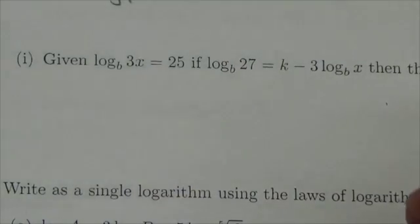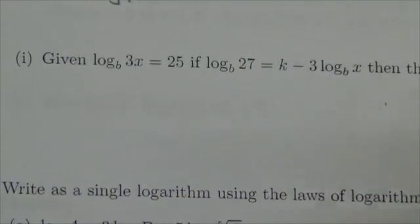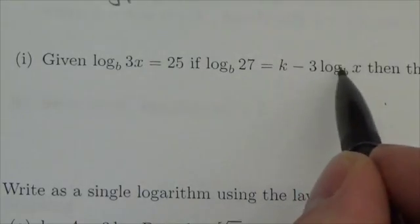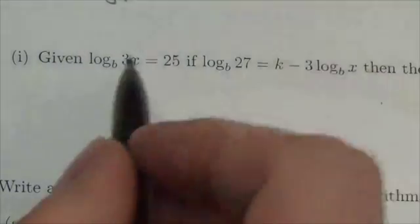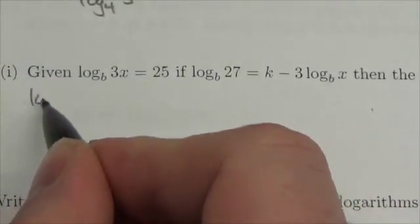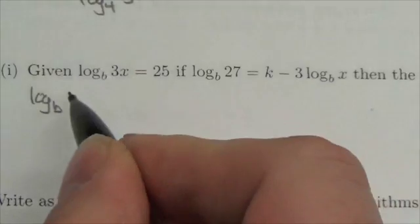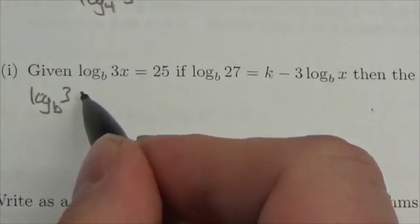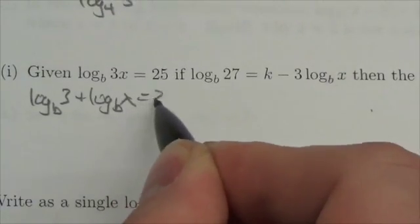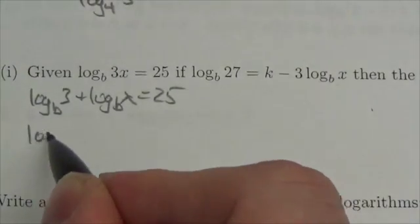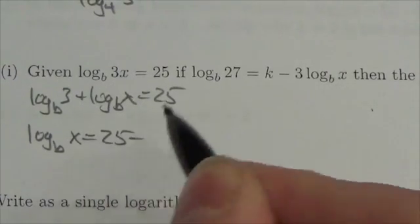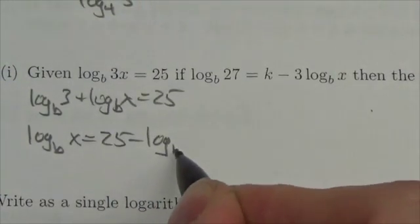Okay, well, when I look at this, the first thing I see is I see this log base b of x here, but just the log base b of x and I see a log base b of 3x here, but I know that the log base b of 3x can be written as the log base b of 3 plus the log base b of x and that this would all equal 25. So the log base b of x is equal to 25 minus the log base b of 3.